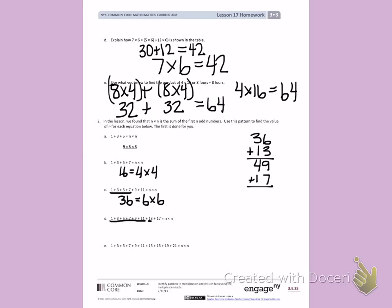9 plus 7 is 16. 4 plus 1 is 5. Plus 1 more is 6.